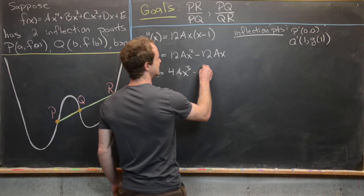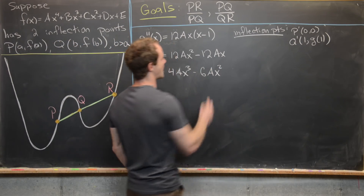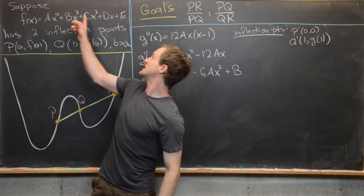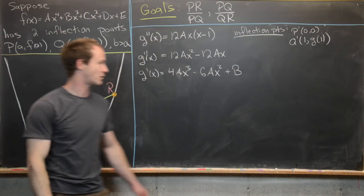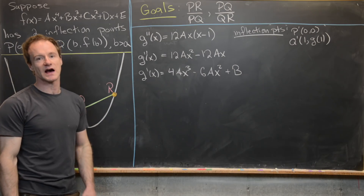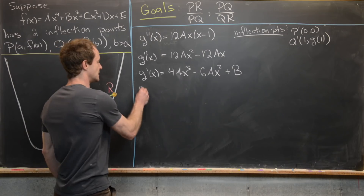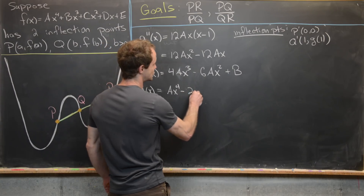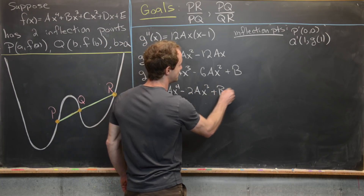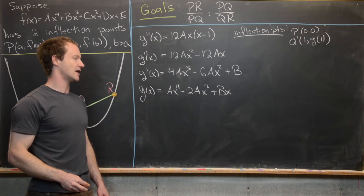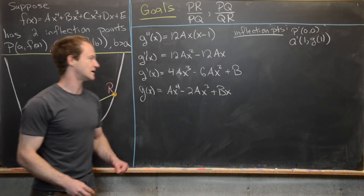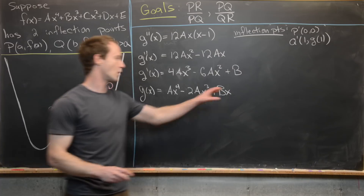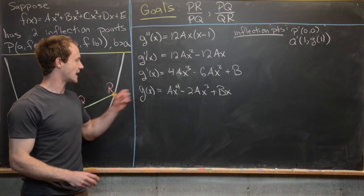Taking the antiderivative one more time gives G(x) = Ax⁴ − 2Ax³ + Bx. There's no additional constant because G passes through the origin — its y-intercept is zero.